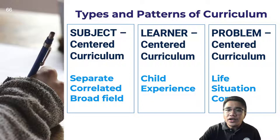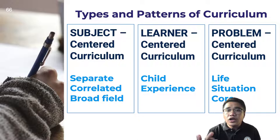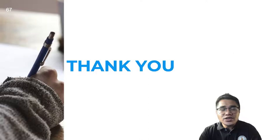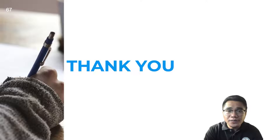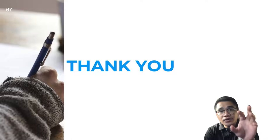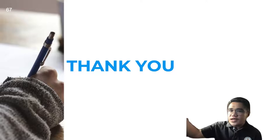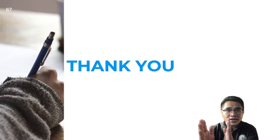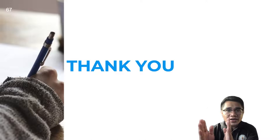So the three types of curriculum are: subject-centered curriculum, learner-centered curriculum, and problem-centered curriculum. The seven patterns are: separate subject design, correlated subject design, broad field subject design, child curriculum design, experience curriculum design, life situation design, and core design. We have talked about the fundamental concepts in curriculum — levels of curriculum where learners are the center, and types and patterns where the experiences should be appropriate to produce meaningful learning.